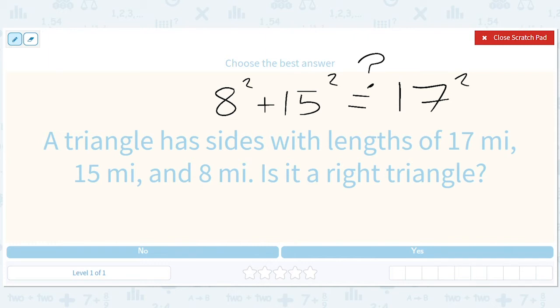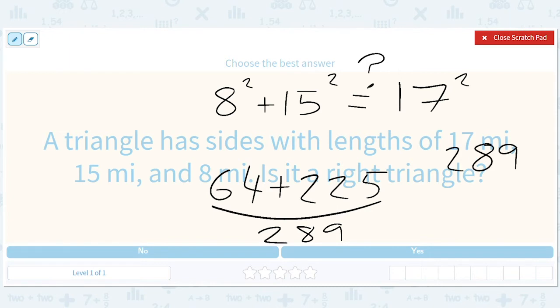So this is 64 plus 225, which is 289. And what's 17 squared? 289. So yes.